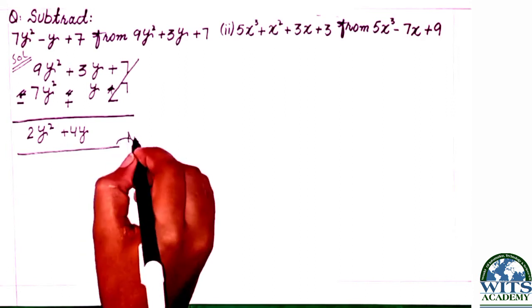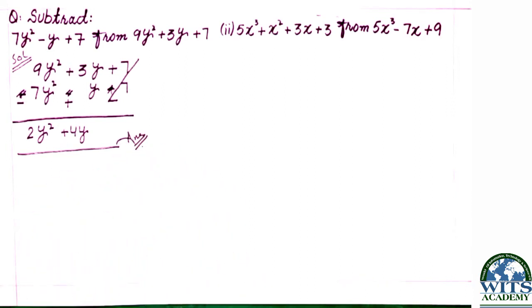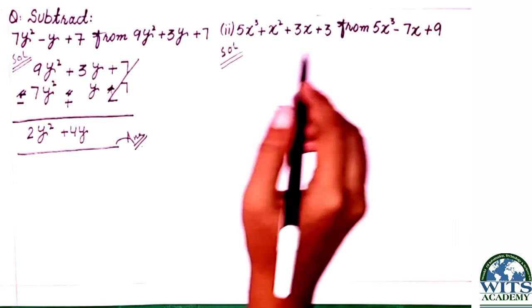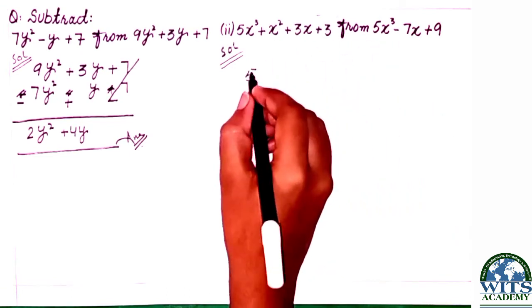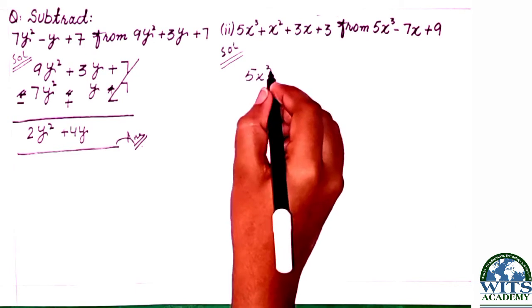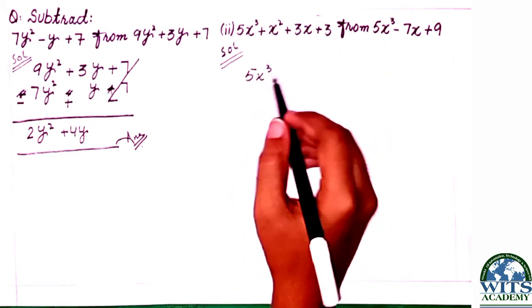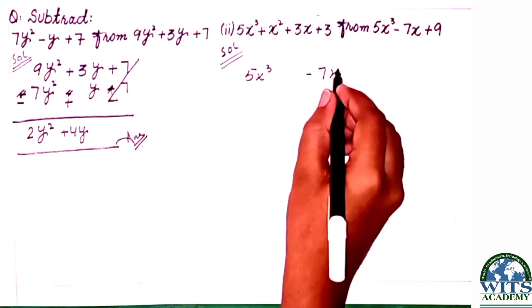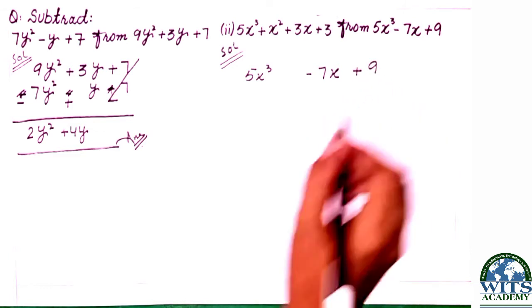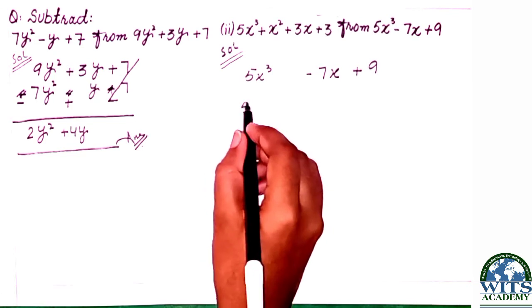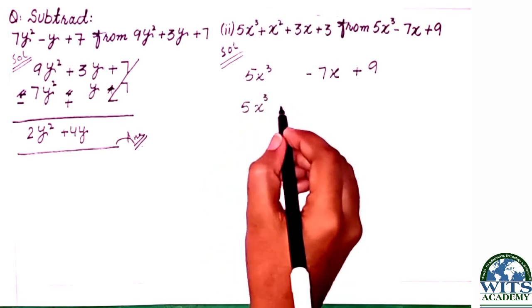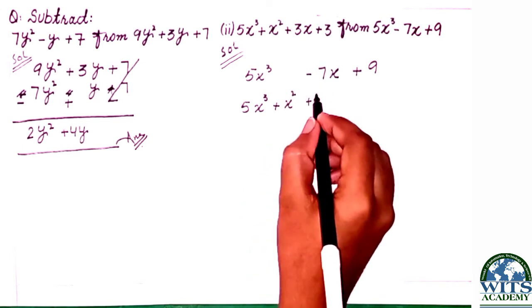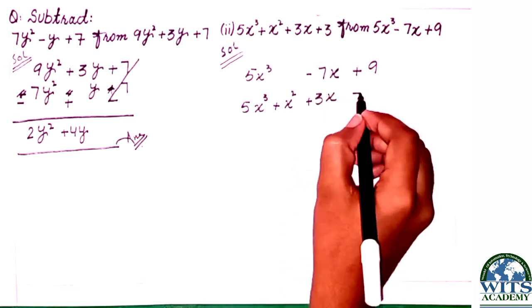Next point: subtract 5y cubed plus x squared plus 3x plus 3 from 5y cubed minus 7x plus 9. First we write the 'from' value: 5y cubed, we leave square place blank, minus 7x plus 9. Below we write: 5y cubed plus x squared plus 3x plus 3.